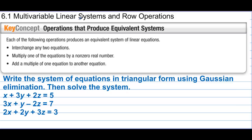Section 6-1: Multivariable linear systems and row operations. Operations that produce equivalent systems — each of the following operations produces an equivalent system of linear equations: interchange any two equations, multiply one equation by a non-zero real number, and add a multiple of one equation to another equation.